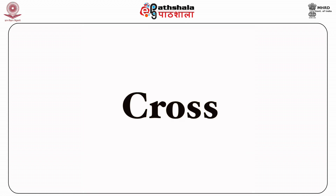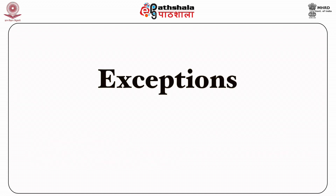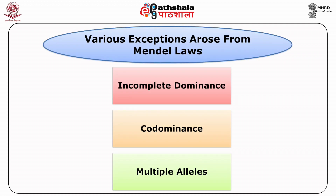The cross made between hybrids of the F1 generation and one of the parents is called a back cross. Back cross is of two types: first is out cross — a cross between F1 hybrids and dominant homozygous parents; second is the test cross — a cross between hybrids of the F1 generation and a recessive homozygous parent.